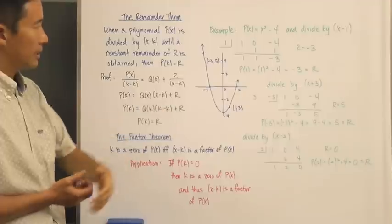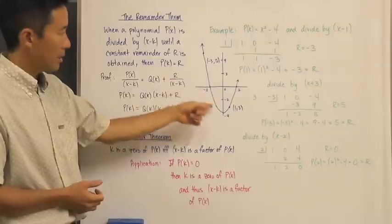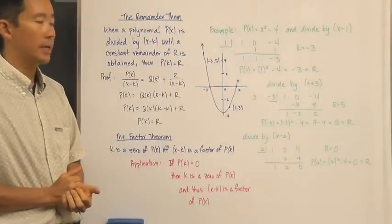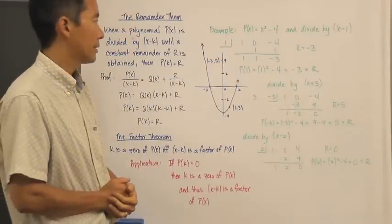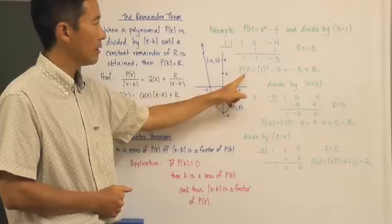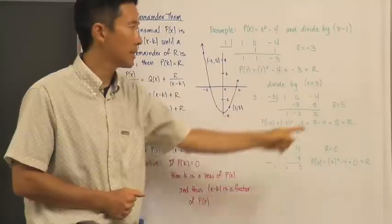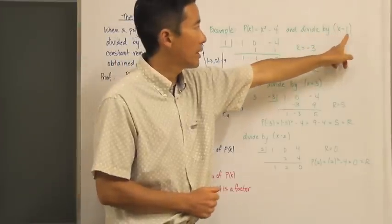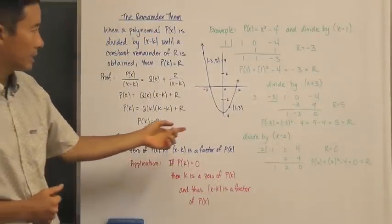Let's look at a specific example: p(x) = x squared minus 4, divided by x minus 1. Using synthetic division, we get a remainder of negative 3. If we evaluate p(1), that gives us 1 squared minus 4, which is negative 3. So the remainder and the value of the function at k are equal — that's exactly what the Remainder Theorem tells us.